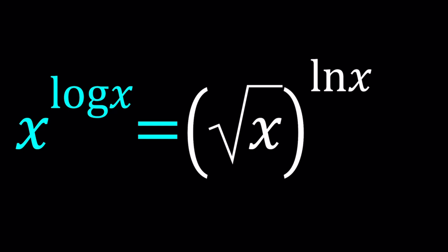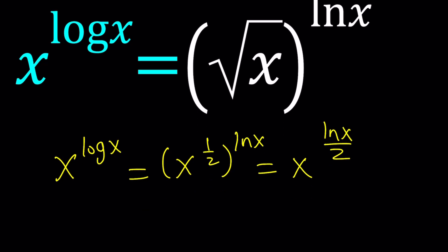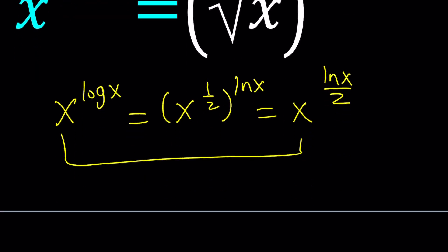First of all, I want to take care of this square root. So I want to write this as x to the power log x equals x to the power one half to the power ln x, which can be written as x to the power ln x over 2. Great. We got the same base. Now let's go ahead and take care of the exponents.